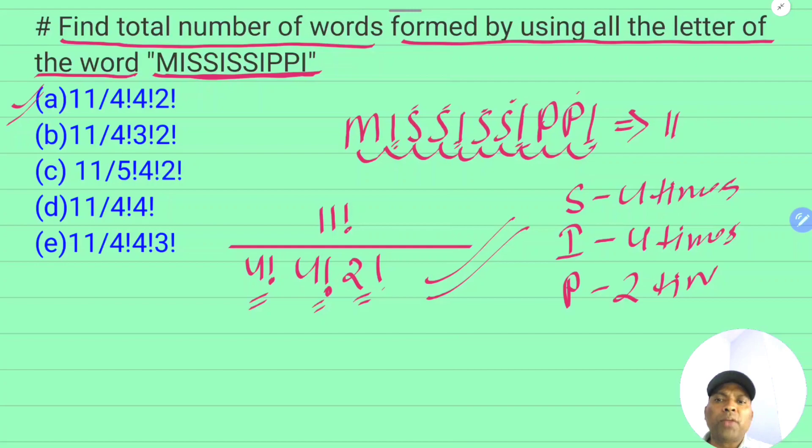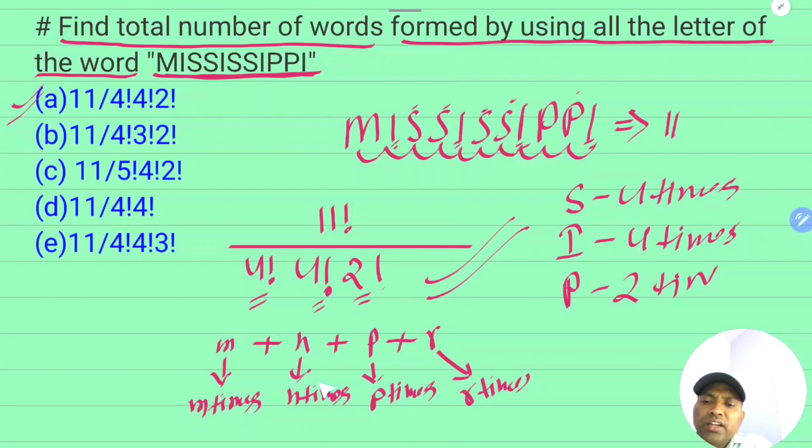Now I'm going to write a formula. Suppose there are letters A, B, C, D. Letter A repeats M times, letter B repeats N times, letter C repeats P times, letter D repeats R times.